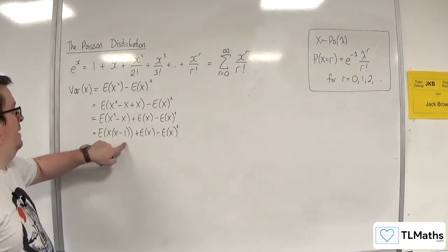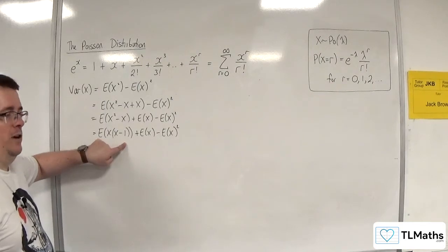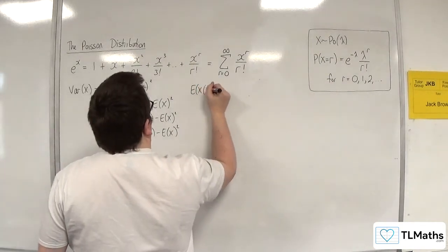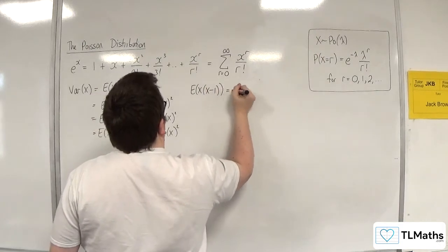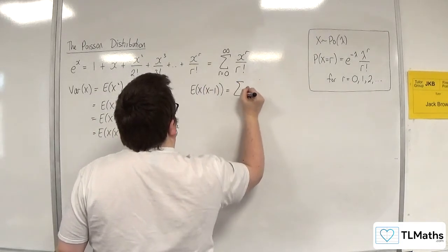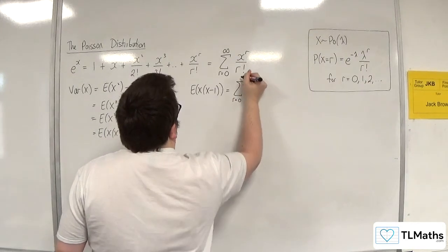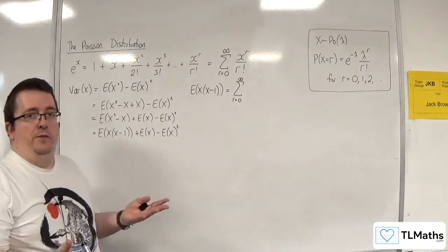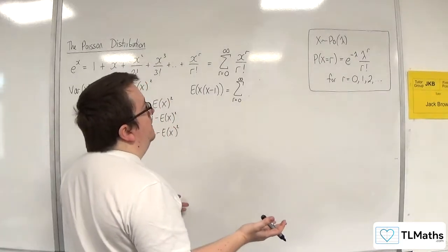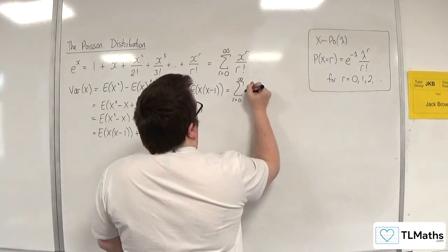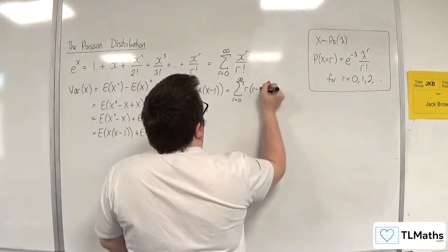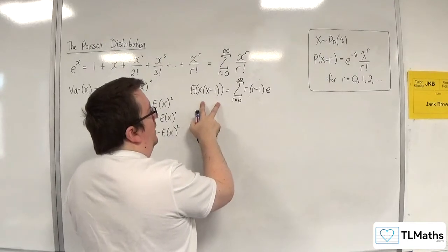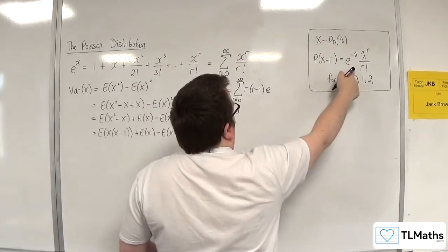Now I focus my attention on E of X times X minus 1, which we know is going to be the summation from R equals 0 to infinity, because there is no bound on N here. This will be R times R minus 1, times by the probability of X being equal to R.